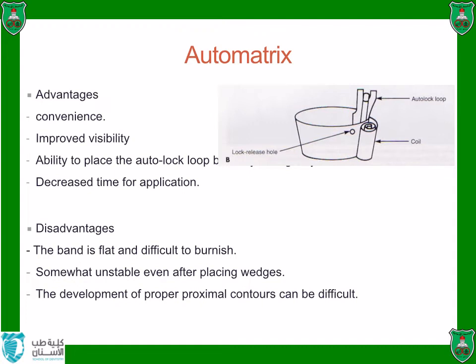The auto matrix has several advantages: it is convenient, improves visibility, has an auto-lock loop that can be placed buccally or lingually, requires no retainer, and decreases application time. However, it has disadvantages: the band is flat and difficult to burnish, it is somewhat unstable even after placing wedges, and development of proper proximal contour can be difficult. The band is narrow at the cervical area and wide at the occlusal area, and buccal and lingual contour must be carved after matrix removal.